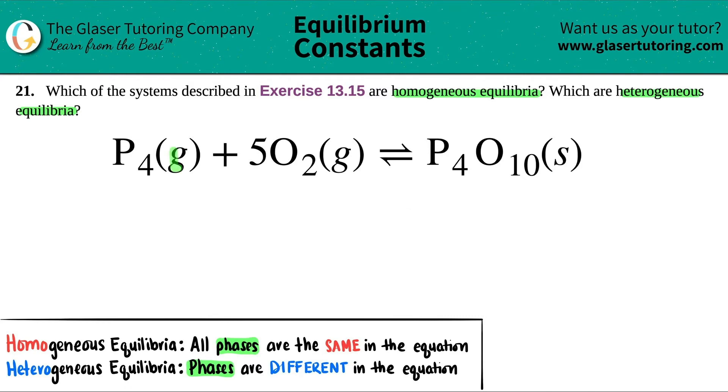So in this case, I have a gas. I got a gas. But here I have a solid. What do you think, guys? Are these phases the same or are they different? I got two gases that are the same, but I have one that's different. So technically, my phases are different in the equation, and this would lead us to a heterogeneous equilibrium.